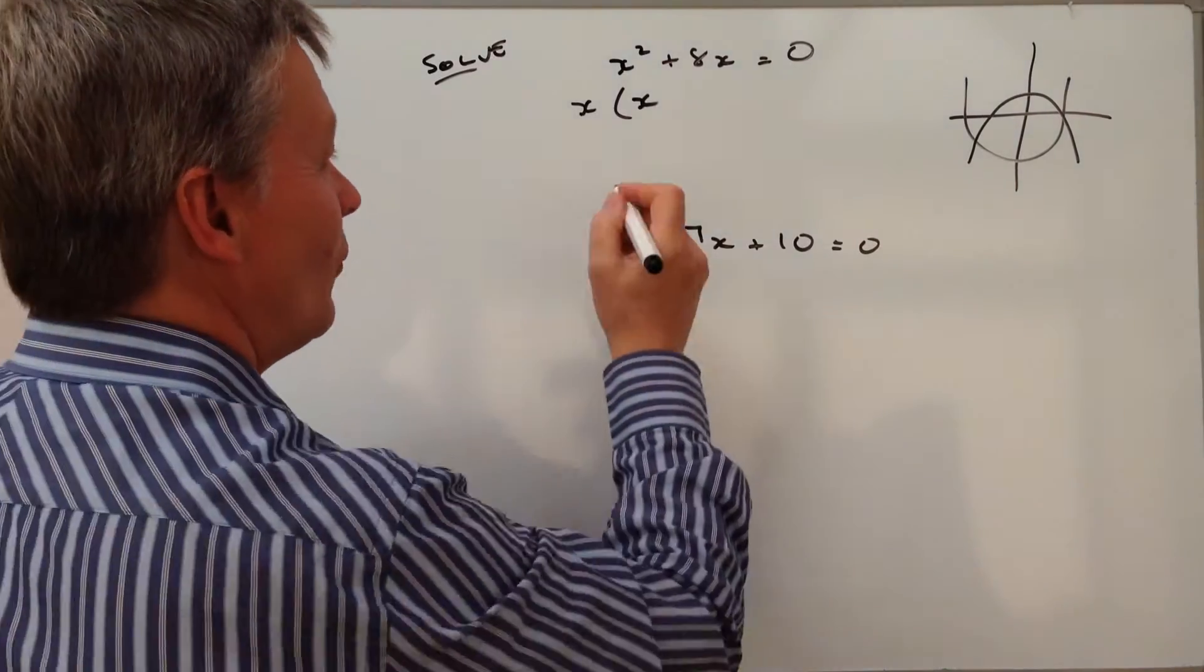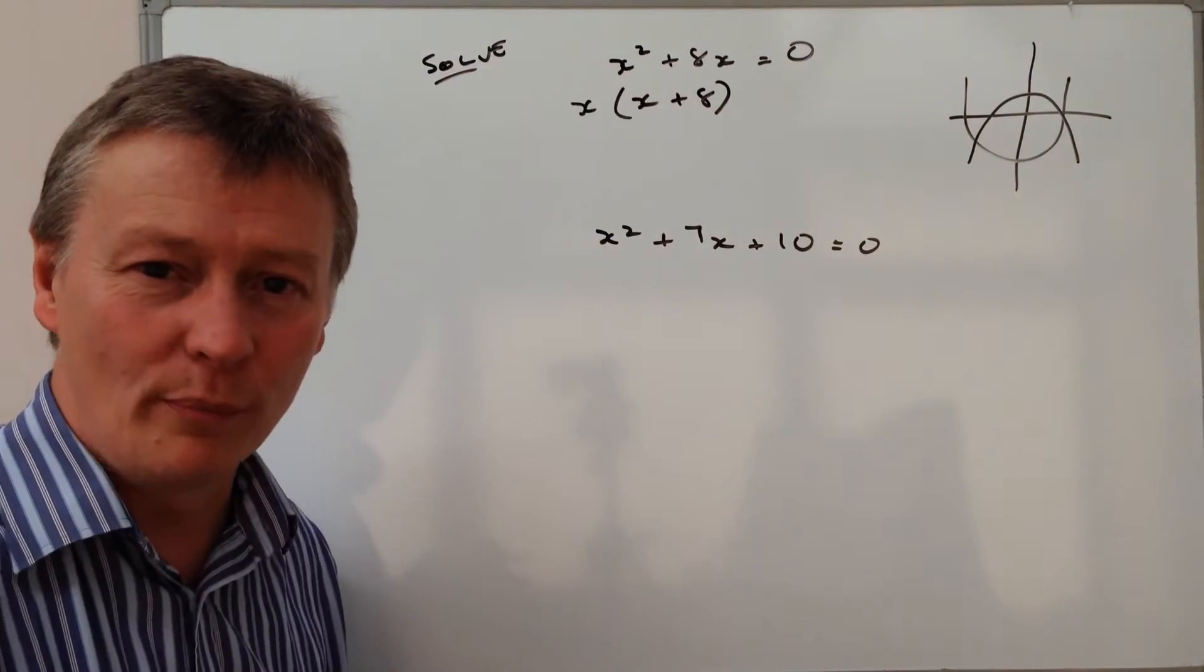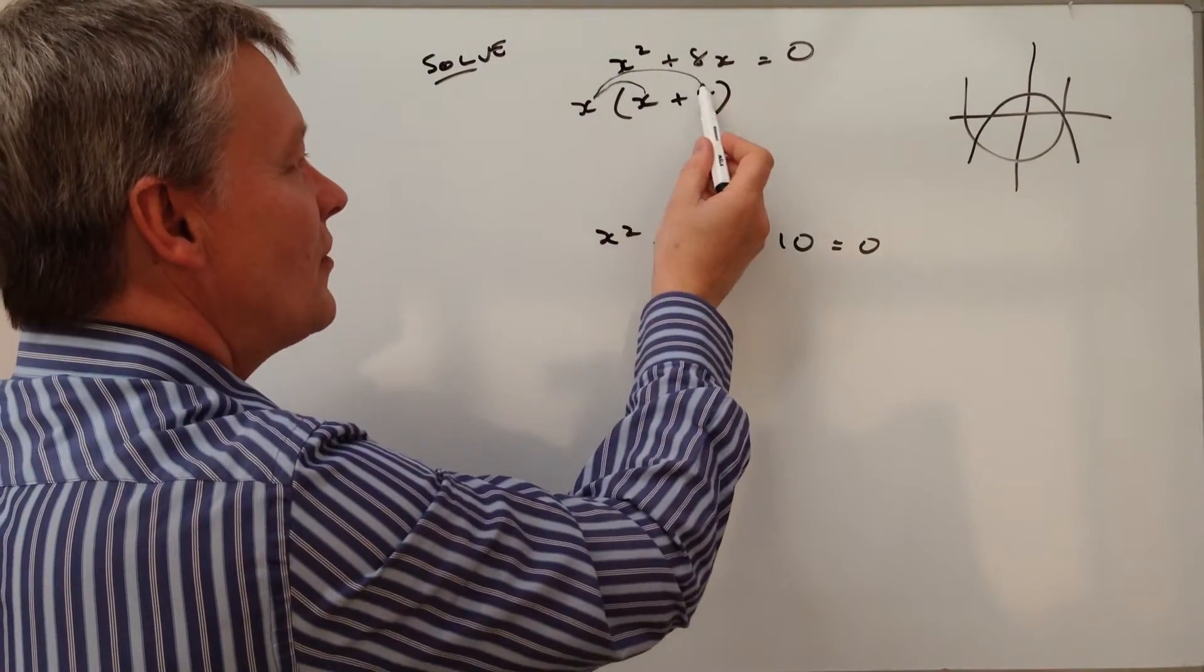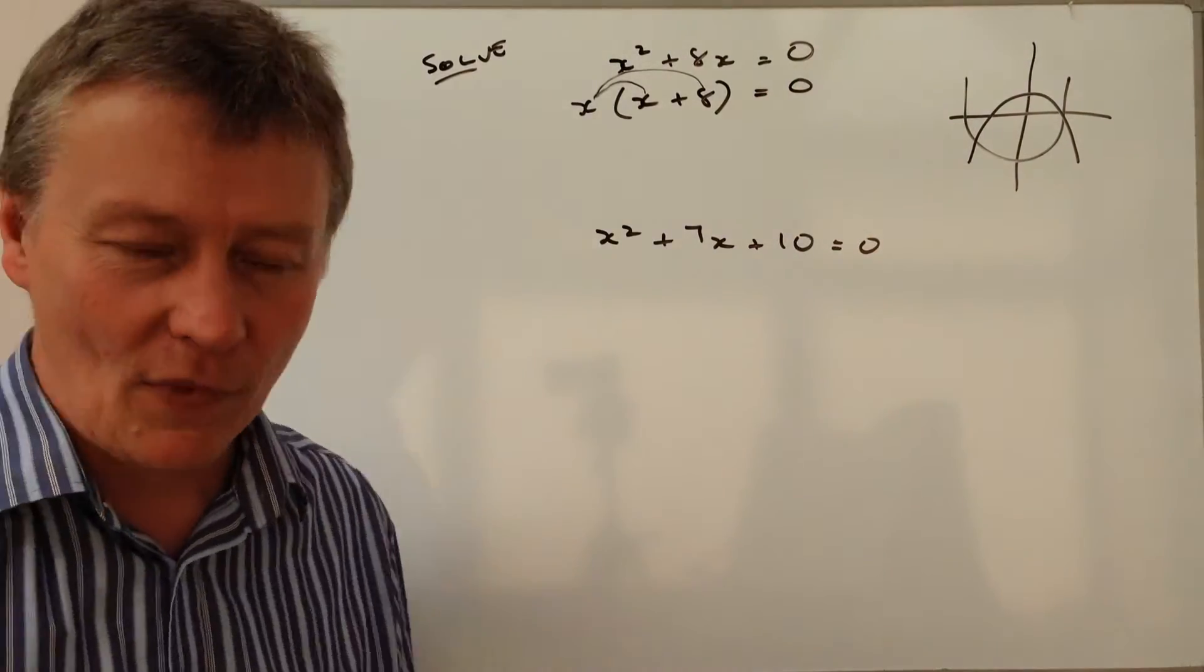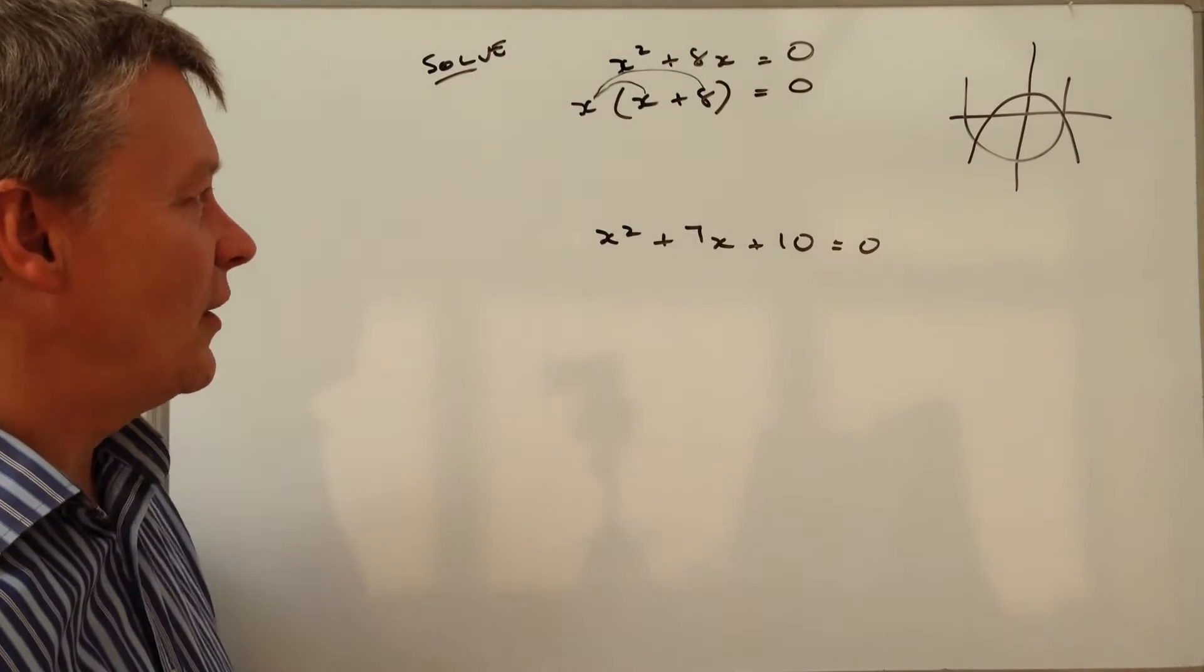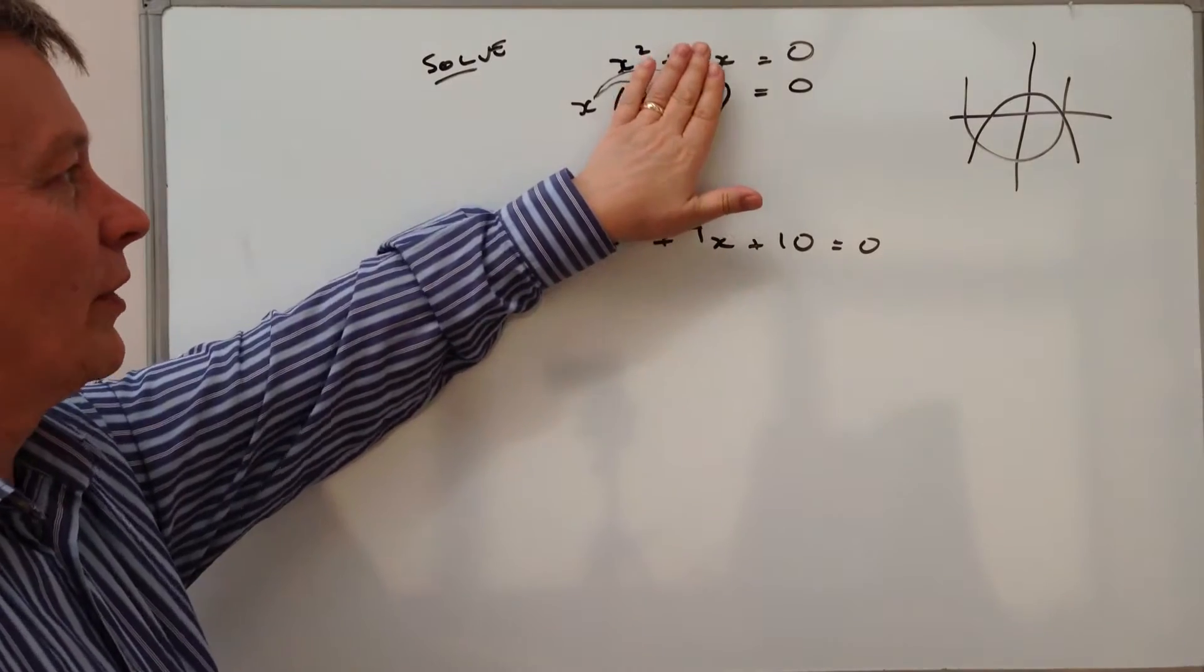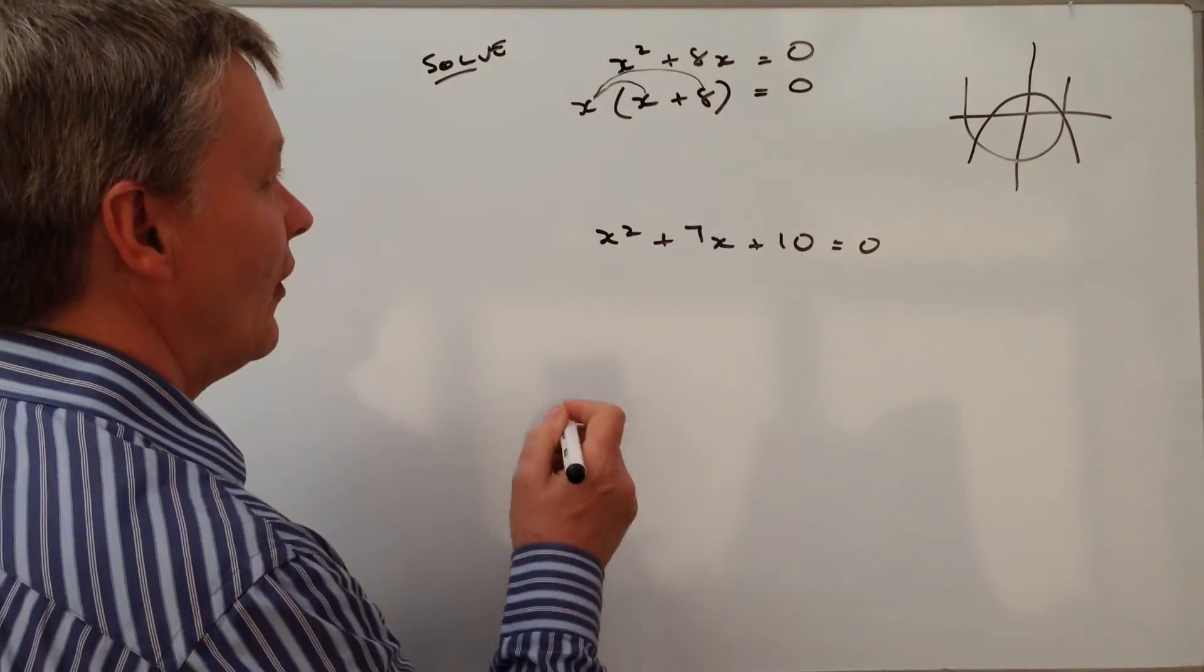If you want to work backwards with that, I've got x times x which is x squared, so this times this is plus 8x. That is equal to zero. That's going to allow me to solve the equation. If this term in the brackets is one on its own, if I just forget it and say it's one on its own, then x is going to equal zero.